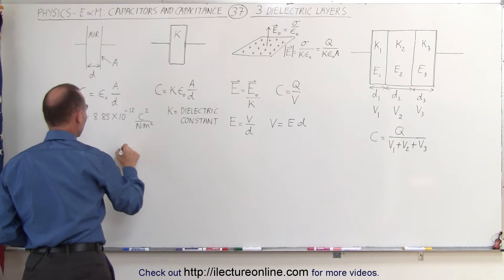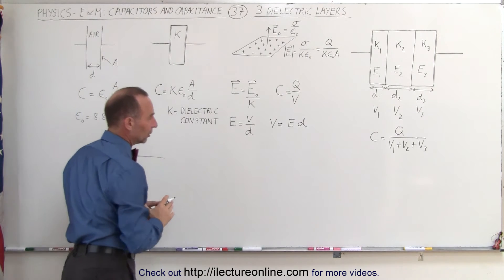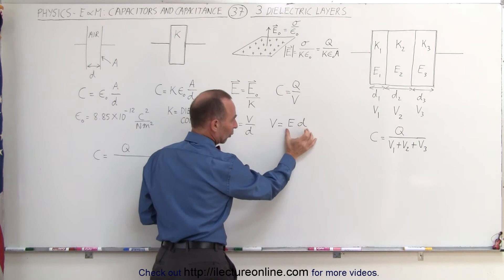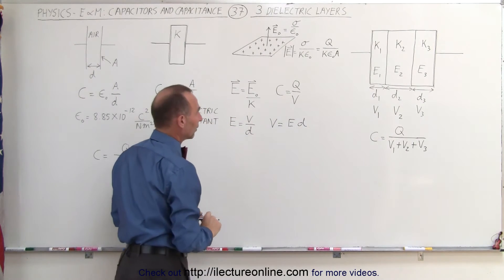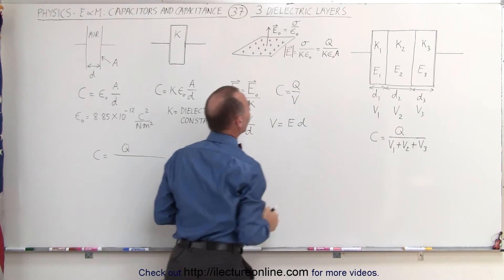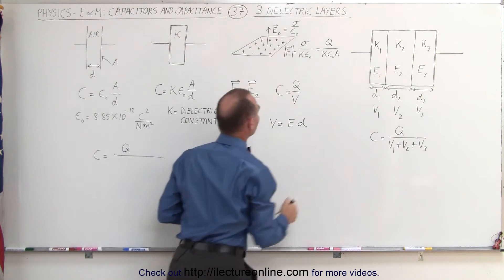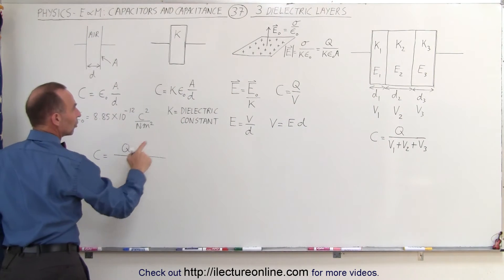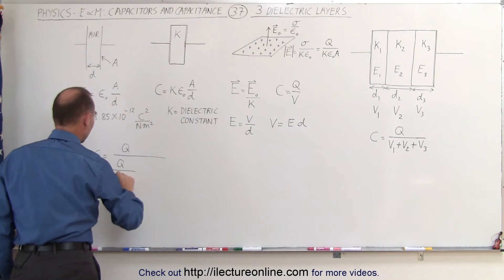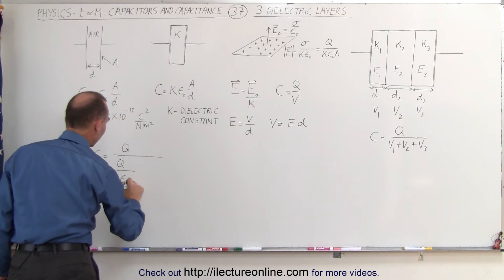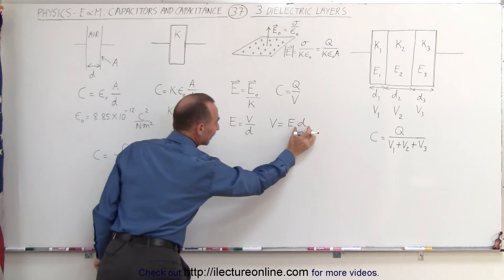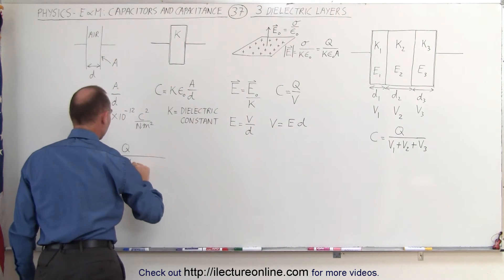The capacitance now is equal to q divided by the voltage across the first layer, which is equal to the electric field across the first layer times the distance — or thickness — of the first layer. E can be calculated to be q over k sub one times epsilon sub nought times a. So the voltage is going to be E times d, which is q divided by the dielectric constant of the first layer times epsilon sub nought times the area of the plates, multiplied by the thickness of the layer, d sub one.